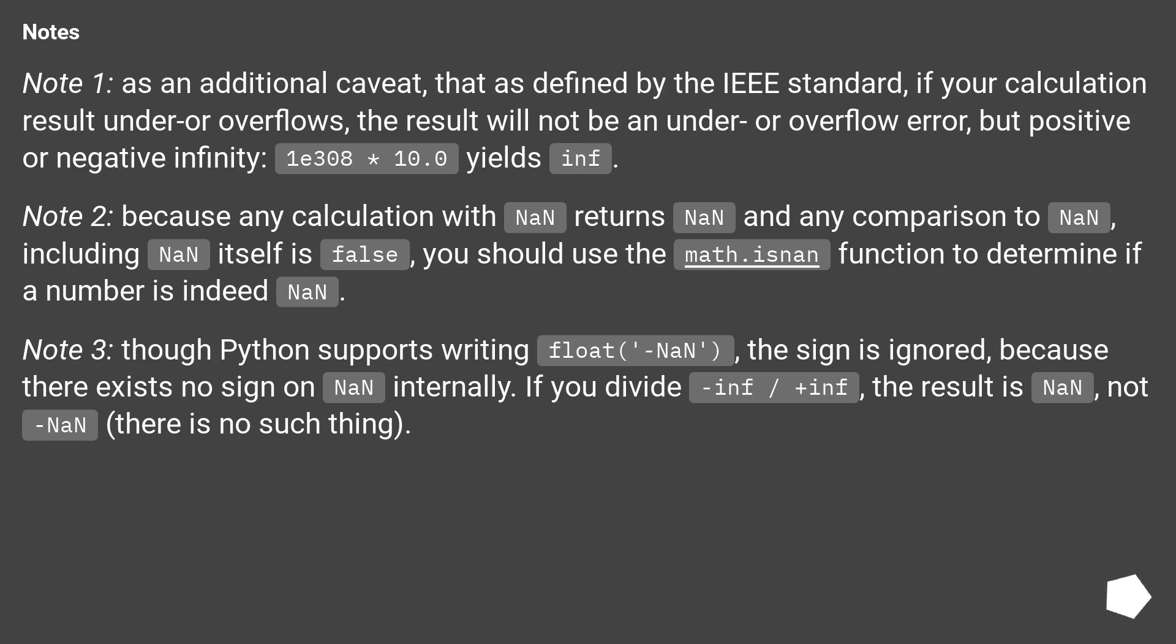Note 3, though Python supports writing float NaN, the sign is ignored, because there exists no sign on NaN internally. If you divide inf by plus inf, the result is NaN, not negative NaN. There is no such thing.